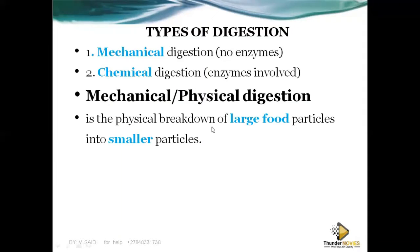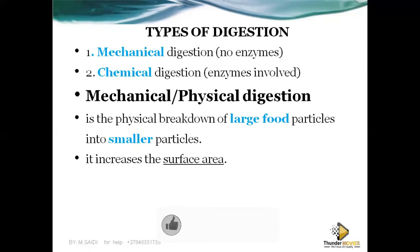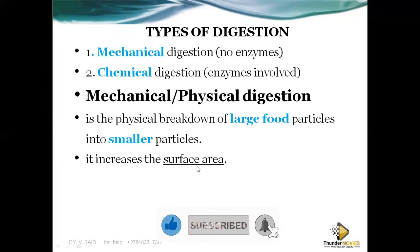Physical digestion is the physical breakdown of large food particles into smaller particles. It's like crushing food from big particles into smaller particles using energy. The reason this happens is to increase the surface area so that chemicals or enzymes can act upon the food very fast.